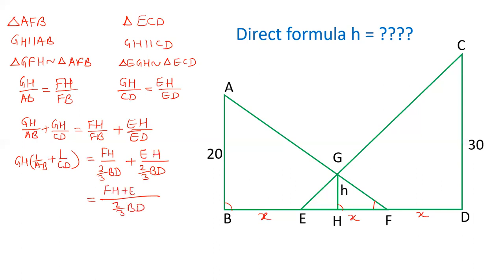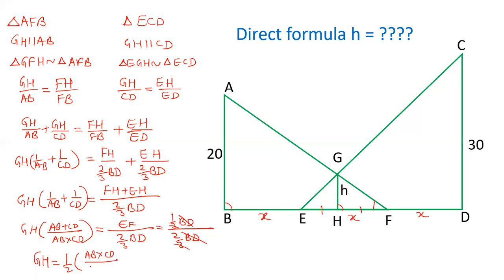So we get FH plus EH. GH common times AB into CD upon AB plus CD. FH and EH together make EF which is one-third of BD, and this is two-thirds of BD. BD cancels and 3 cancels.